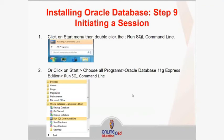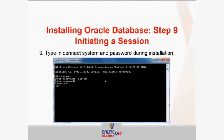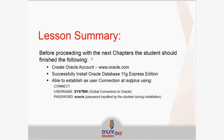Now it is time to run the SQL command line. In the Start menu, find 'Run SQL Command Line.' If you cannot find it, go to Start, choose All Programs, find Oracle Database 11G Express Edition, and then Run SQL Command Line. In the SQL command line, type 'Connect System' and press Enter, then input your password 'oracle.' If the password is correct, it will say 'Connected.' The lesson summary: create an Oracle account, successfully install Oracle Database 11G Express Edition, and establish a connection using the System account with password oracle.